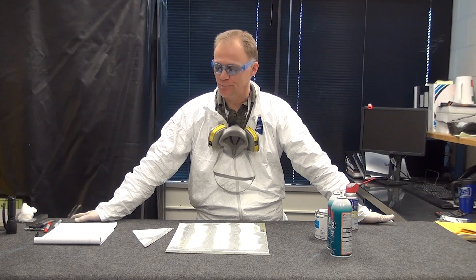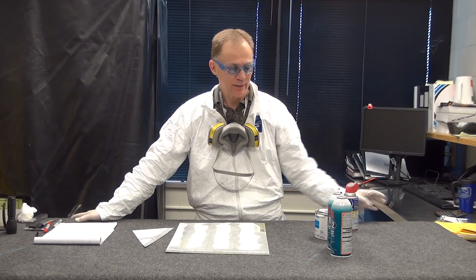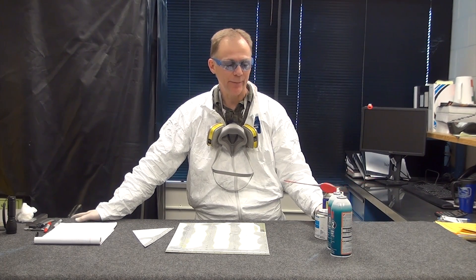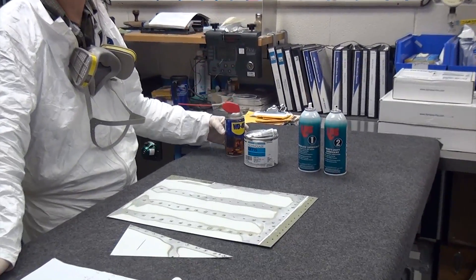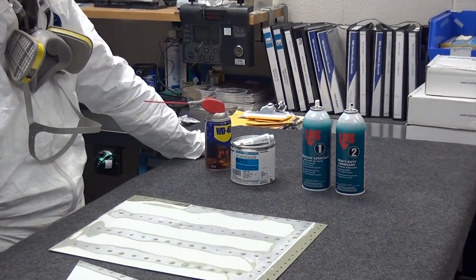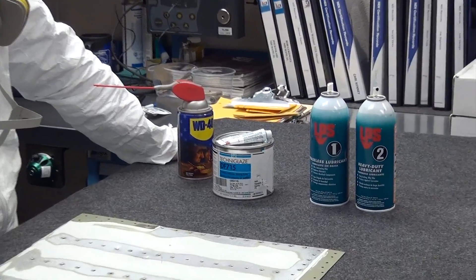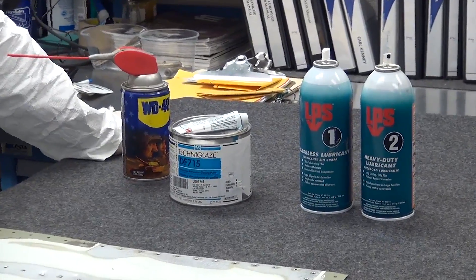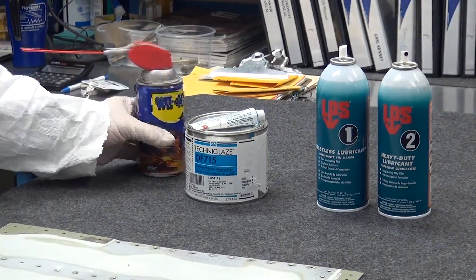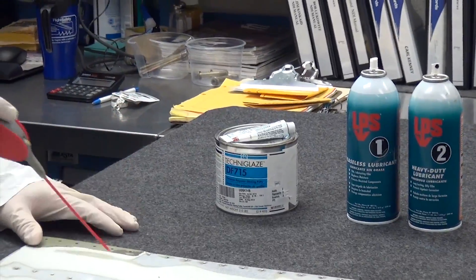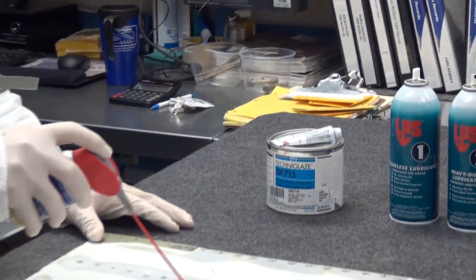First thing we want to do is develop some sort of a mold release. I've got here today several examples. You can use LPS products one, two, or three. You can use WD-40 if you've got it around. I like to use sprayable non-bonding film that you can just spray on the part. So what we'll do is spray the area that we are going to be evaluating.